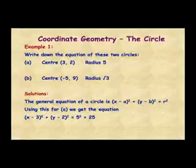For part b then, we have a centre of minus 5, 9 and radius square root 3. Again, substituting into the general formula for the equation of a circle, we get x minus minus 5 squared plus y minus 9 squared equals the square root of 3 all squared.